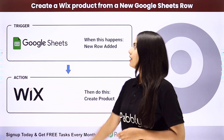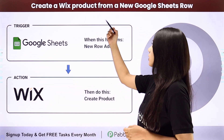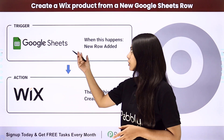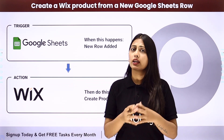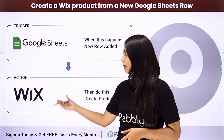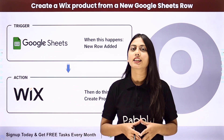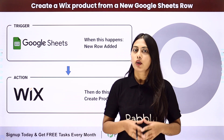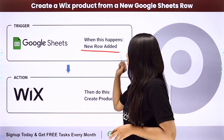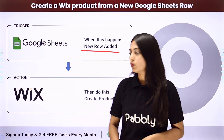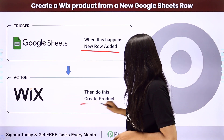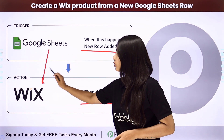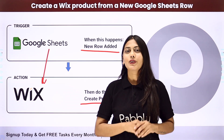Hello everyone, today we will learn how to create a Wix product from a new Google Sheet row. If you are using Google Sheet to collect all your data, you can create a product in your Wix application using the data collected in Google Sheet. You can create this automation with the help of Pabbly Connect, where the trigger will be a new row added in Google Sheet and the action will be the newly created product in Wix. We will be creating the integration between these two applications.